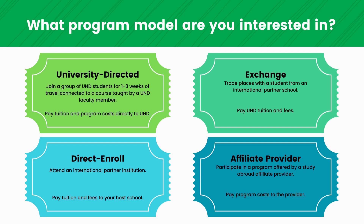Next is exchange: trade places with a student from an international partner school. You would pay UND tuition and fees — whatever your tuition is for a semester at UND is the same tuition you would pay for that exchange program. The third is direct enroll: attend an international partner institution and pay tuition and fees to your host school. Last is affiliate provider: participate in a program offered by a study abroad affiliate provider and pay program costs to the provider. Consider these options carefully to find the perfect fit for your academic and personal goals.